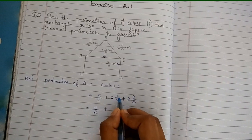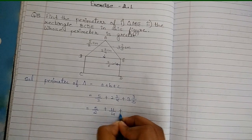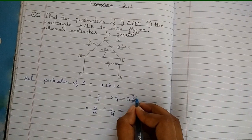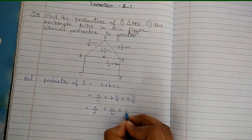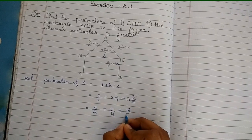Now we convert the mixed fractions to improper fractions. 2 times 4 is 8, plus 3 is 11, so 11/4. Then 3 times 5 is 15, plus 3 is 18, so 18/5. So we have 5/2 plus 11/4 plus 18/5.